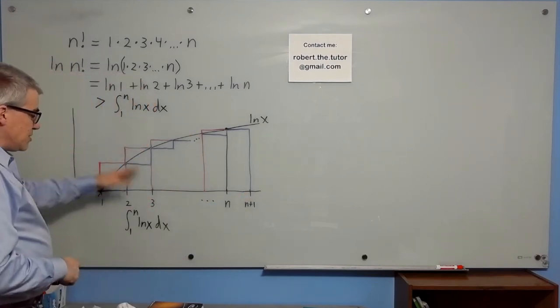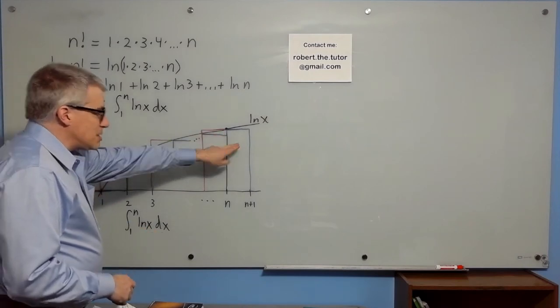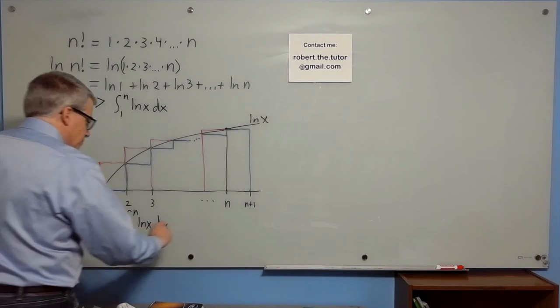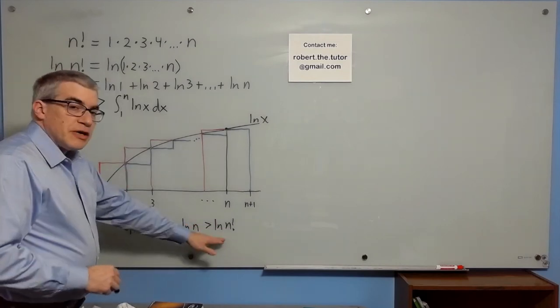But we have to go out to n plus 1 in order to get the whole deal. Which means the integral of natural log x dx from 1 to n plus the area of this rectangle, which is natural log of n, is an overestimate of natural log n factorial.